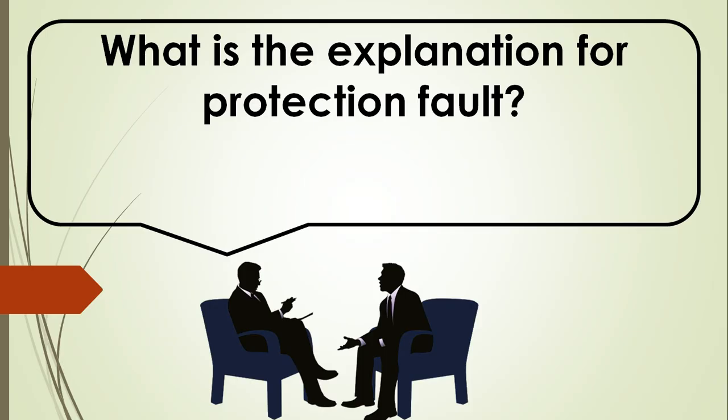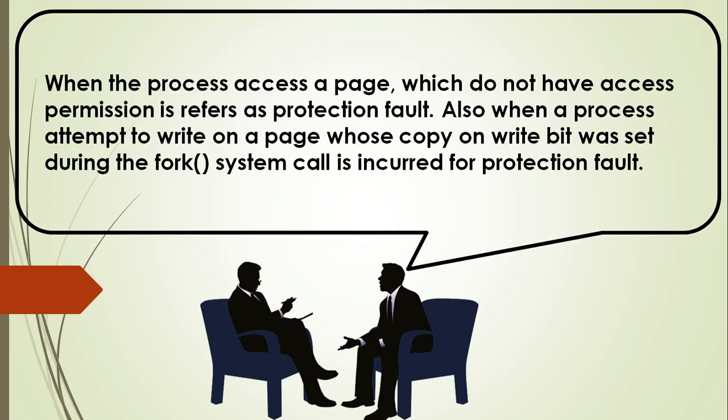And the answer is here. When a process accesses a page which does not have access permission, that is referred to as a protection fault. Also, when a process attempts to write on a page whose copy-on-write bit was set during the fork system call, a protection fault is incurred.